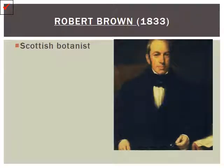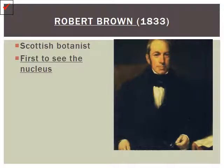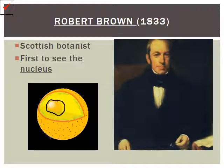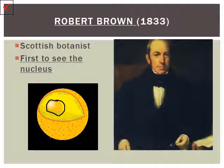The final individual we're going to talk about today is Robert Brown. He was a Scottish botanist, and he was the first individual to observe the nucleus — the center part of the cell. The nucleus is very important because it contains and holds the DNA of the cell. These are only found in eukaryotic cells, not prokaryotic.